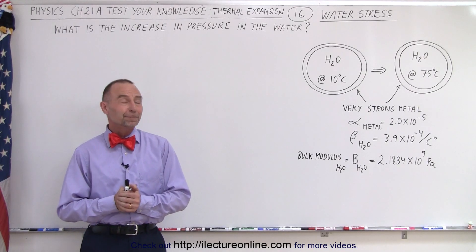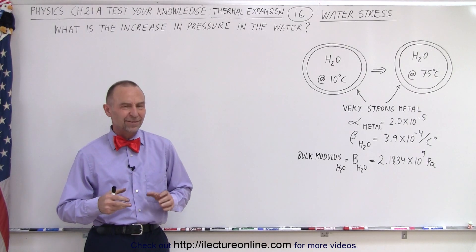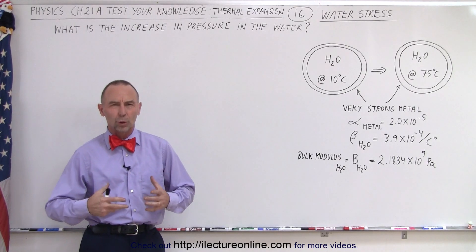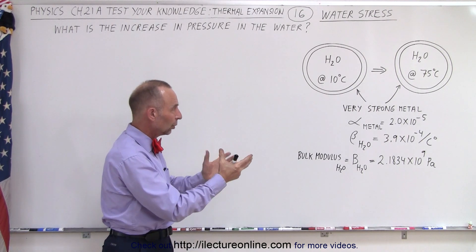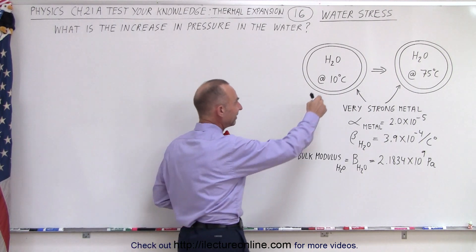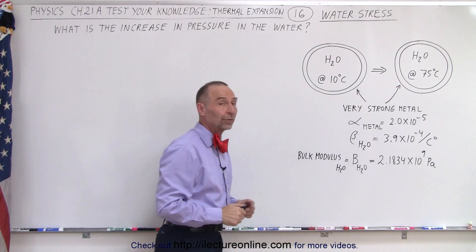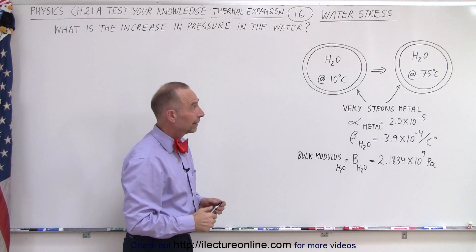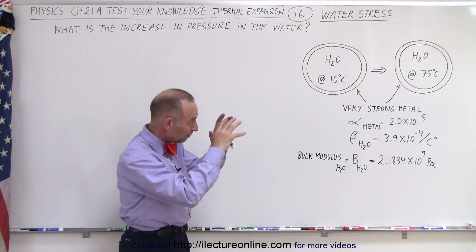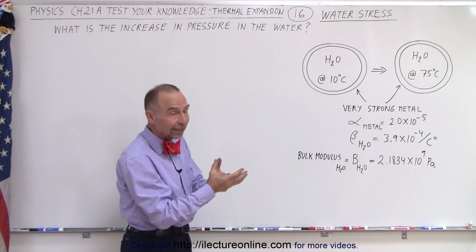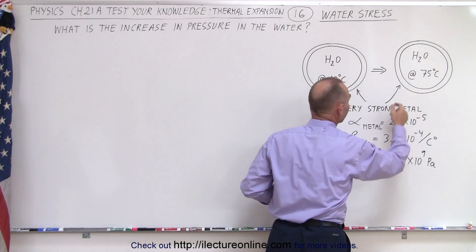Welcome to Electron Line. Our next example is what we would call a water bomb. We have a very strong metal with water inside at an initial temperature of 10 degrees centigrade. Then the water and the bomb, the metal around it, is increased in temperature to 75 degrees centigrade.